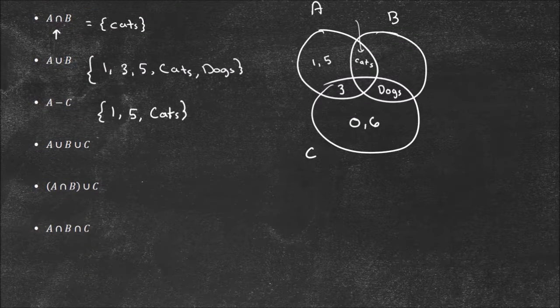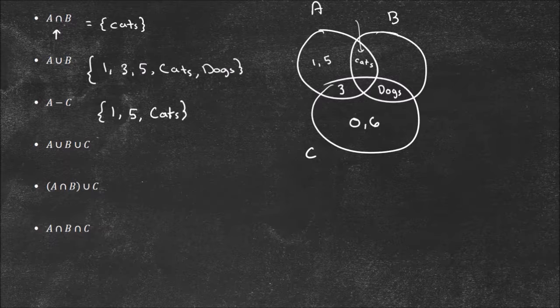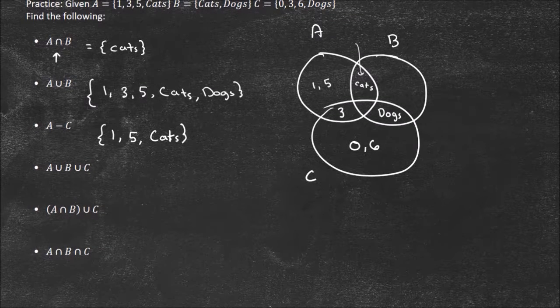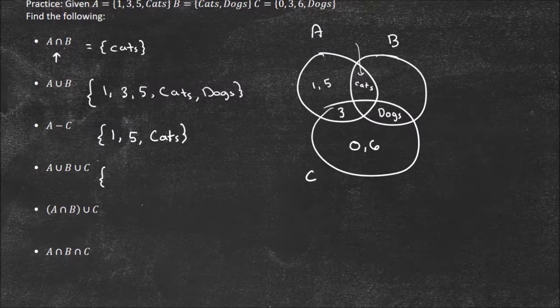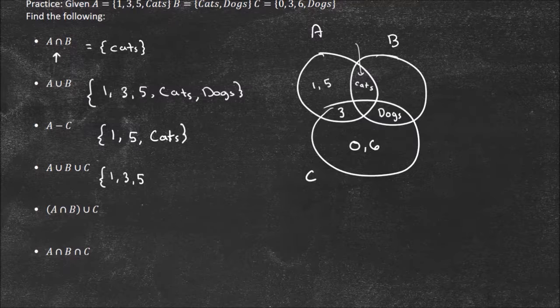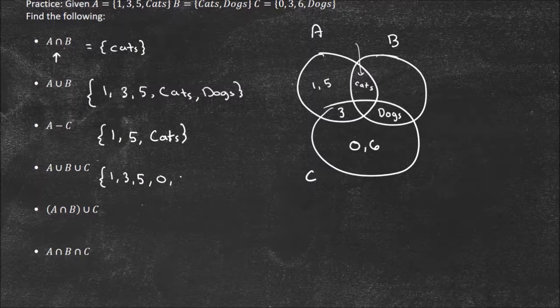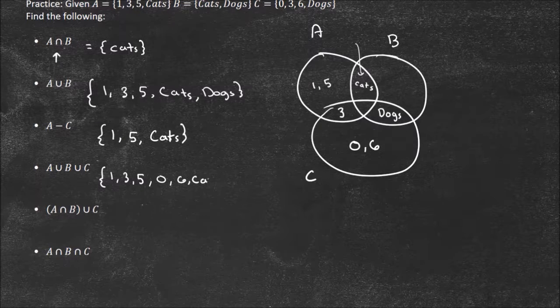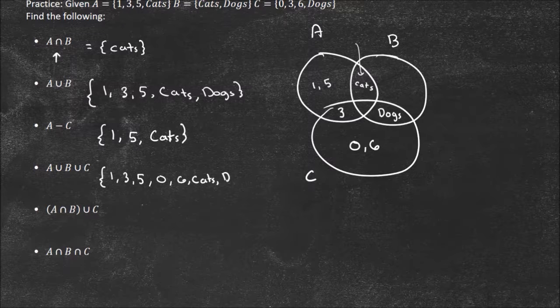And for now, when we get three involved, I recommend doing the Venn diagram. And now it's A or B or C. So now it's just everything in our system. And that's just going to be a pretty basic one here, actually. So 1, 3, 5, I'll do all the numbers. So 0, 6, cats, and dogs, because that includes everything. There's no exclusions here, A or B or C.